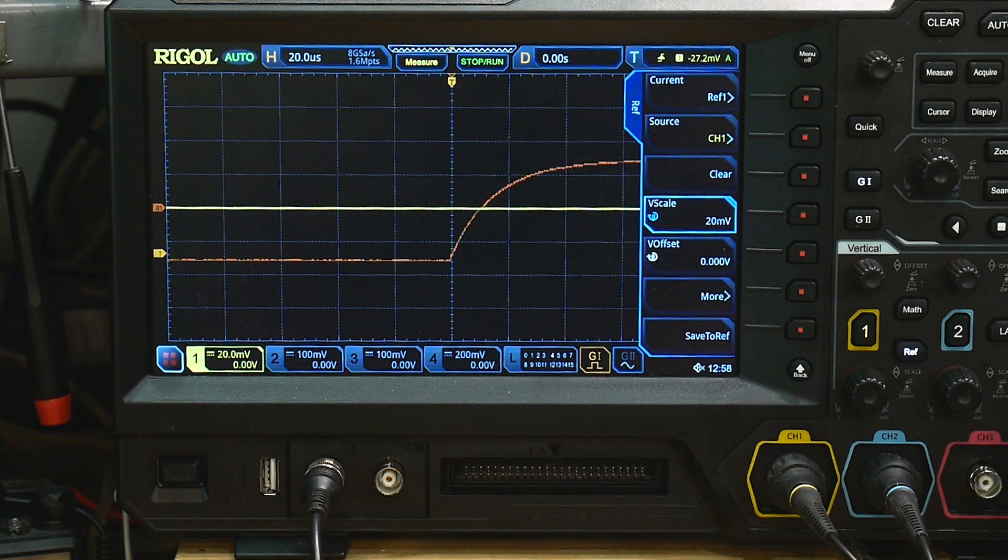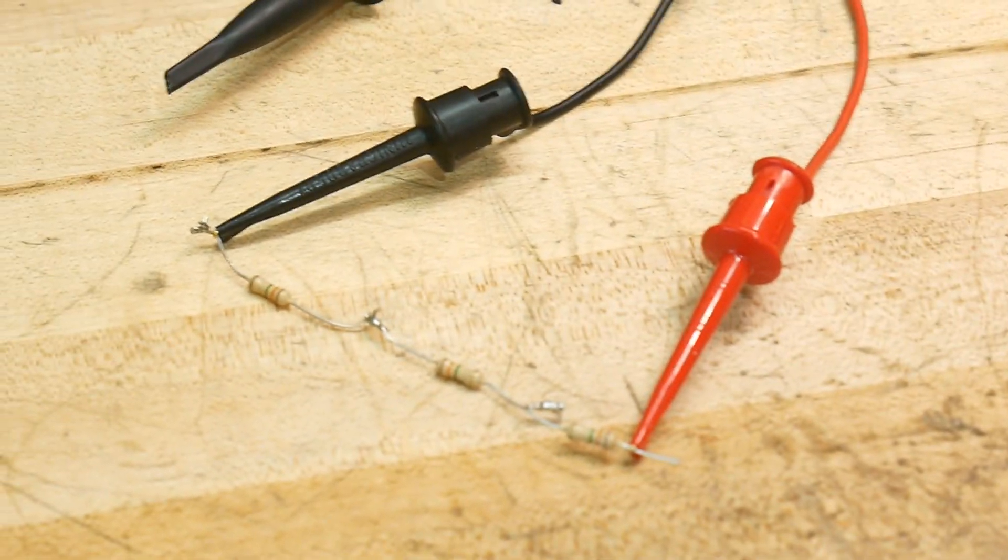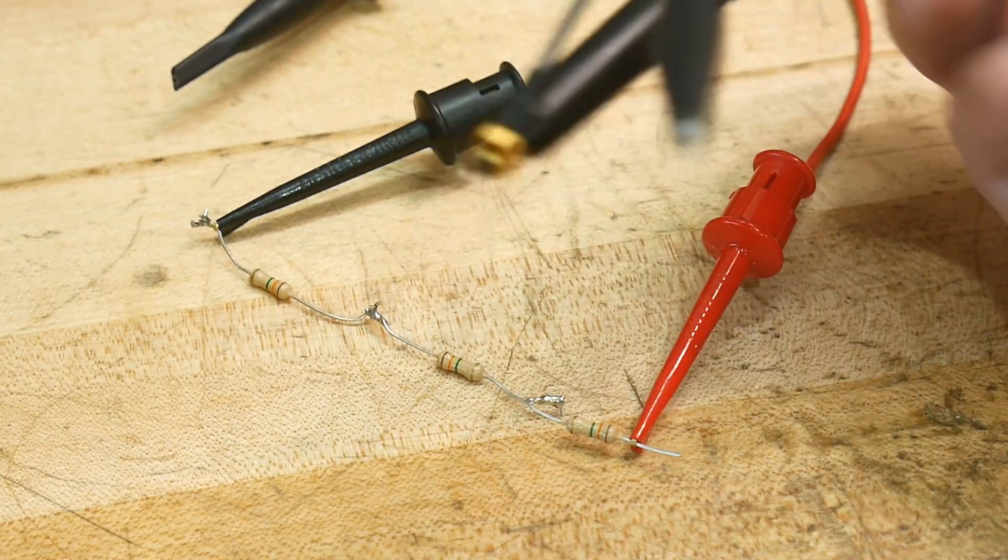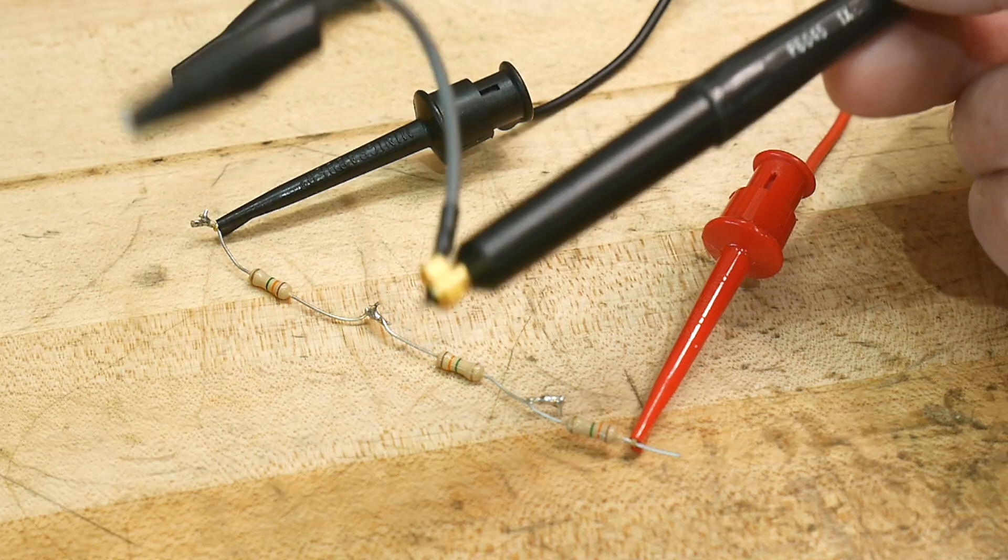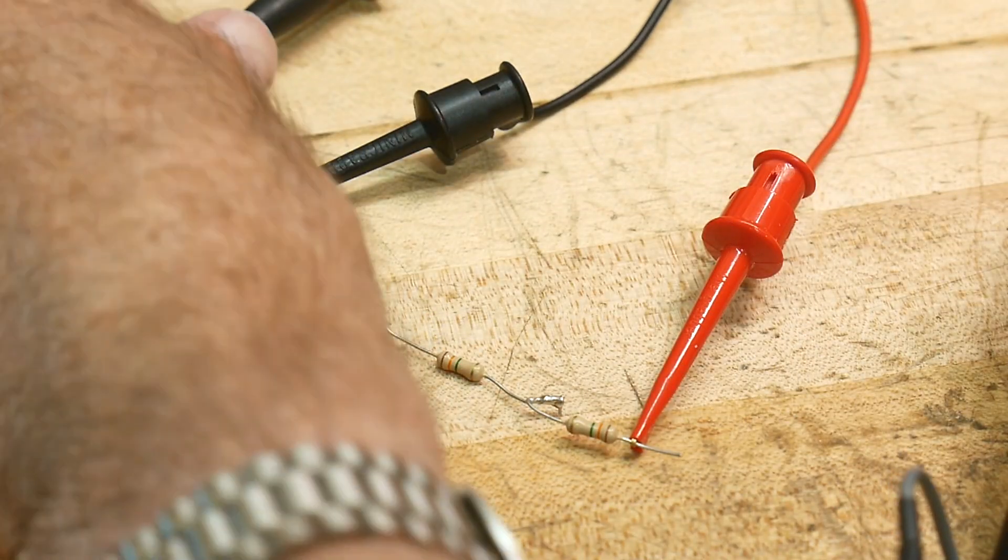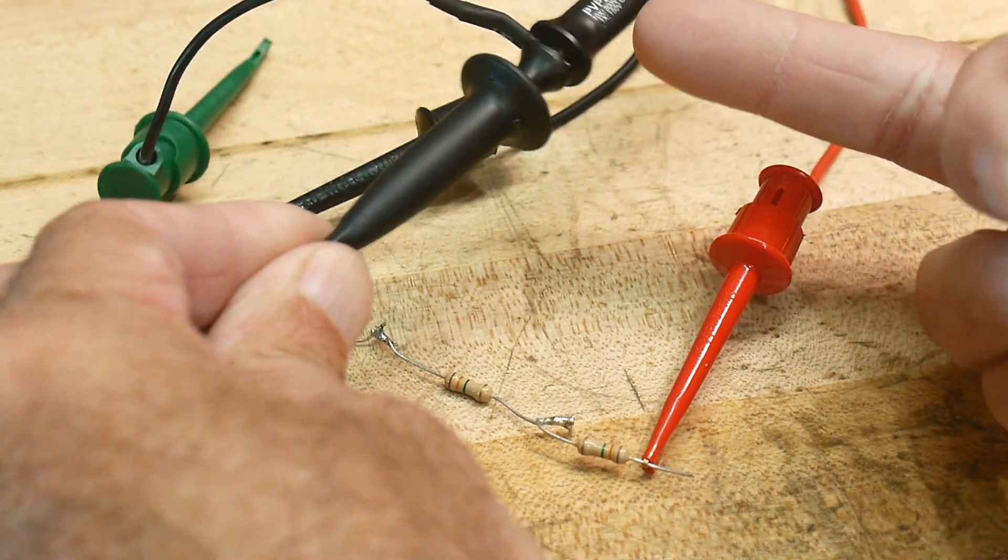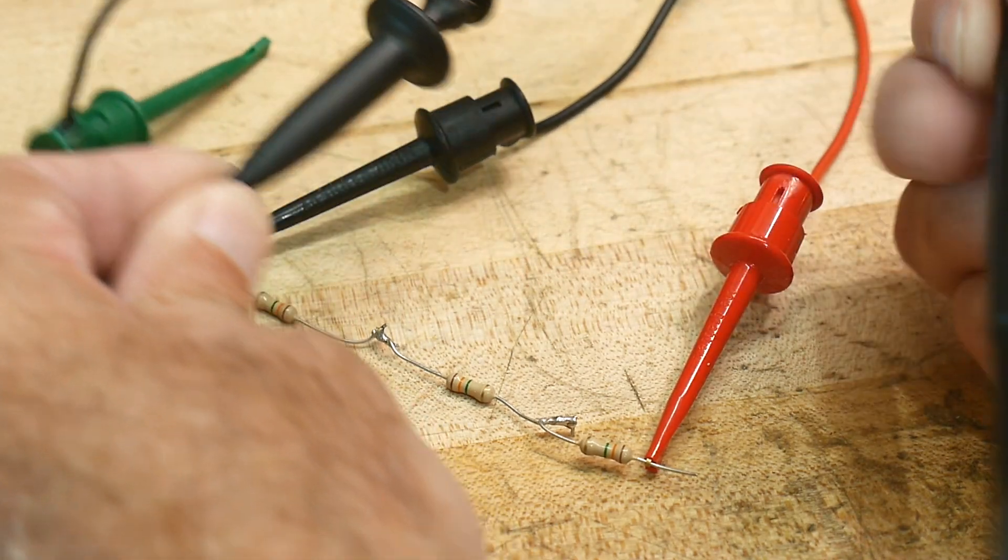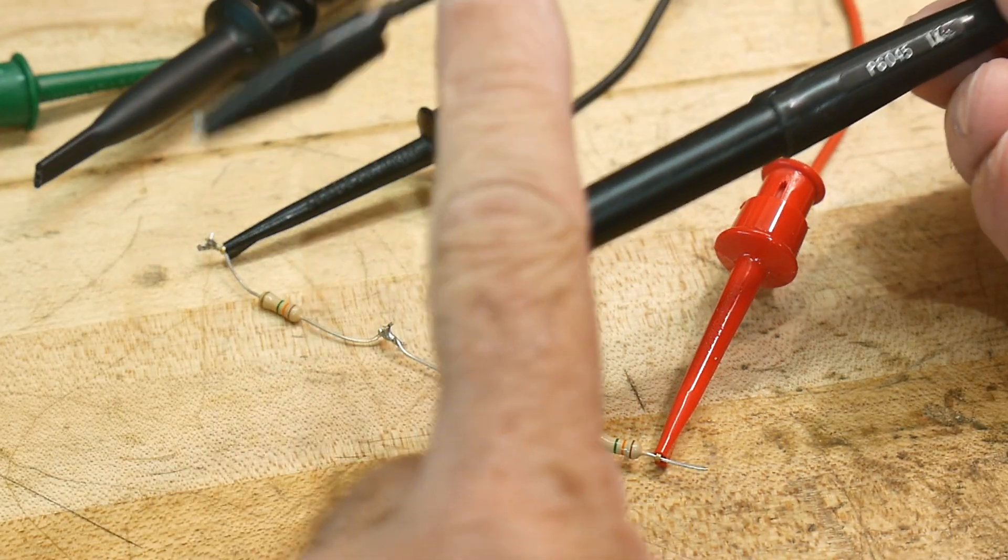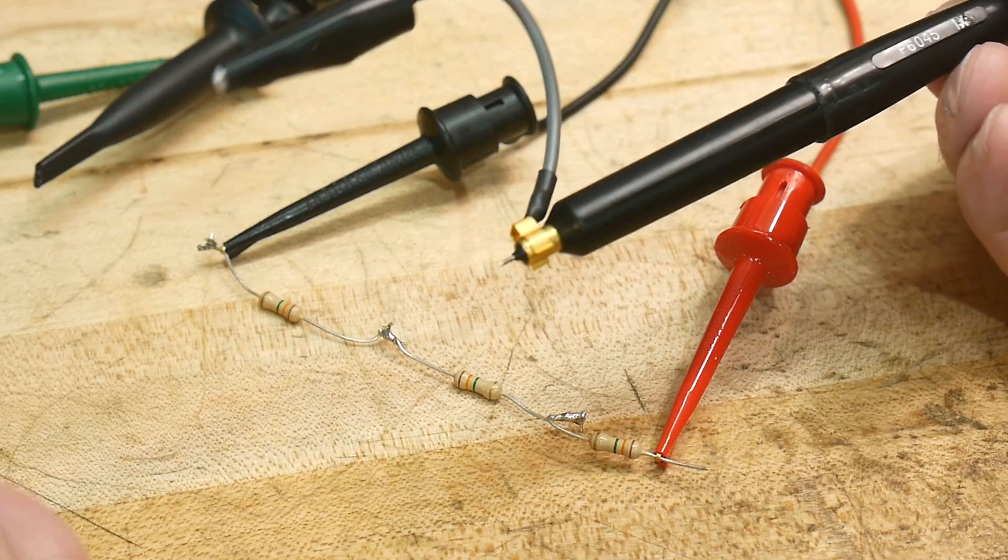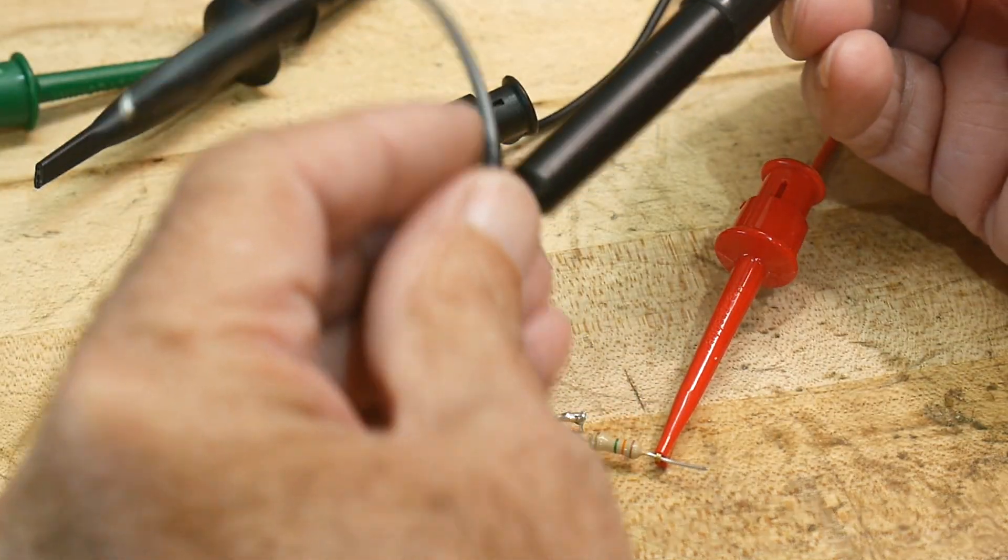All right, so let's go measure a different one. We're going to measure the same thing, but this time we're going to use a fancy active probe. So if you read the specifications on this probe, it's 10 megaohms input. If you read the specifications on this one, it's 10 megaohms input. So we should expect to see the same thing on the screen.